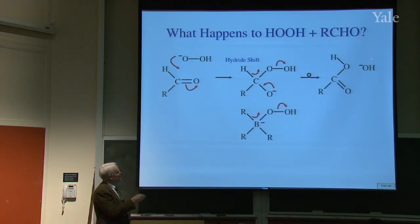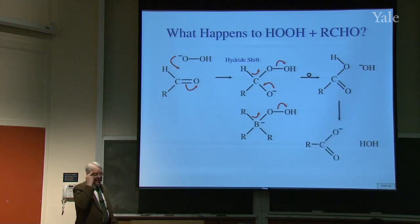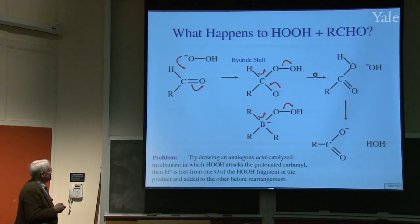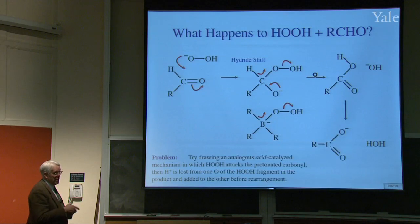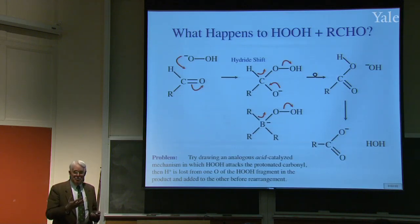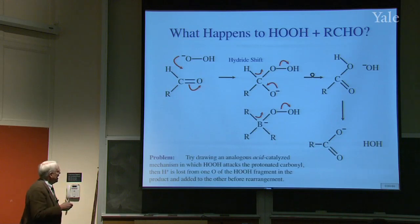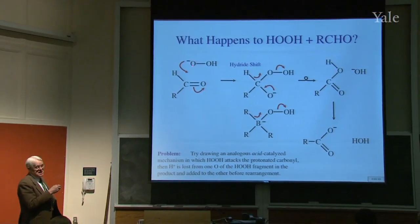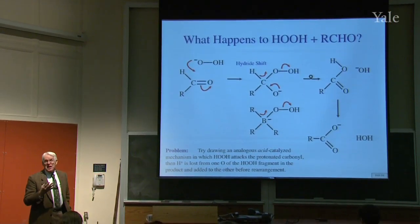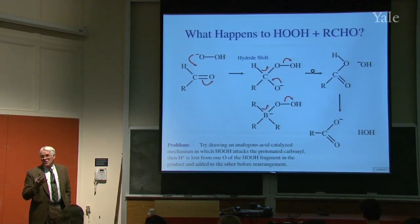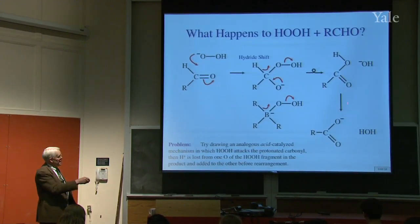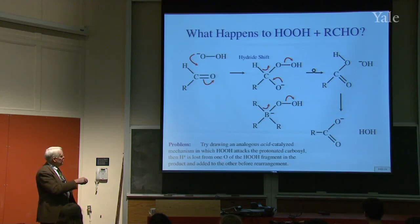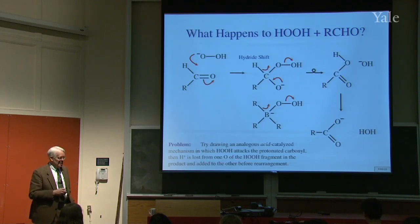The carboxylic acid product generates hydroxide, which reacts with it to give the carboxylate anion as the stable final product. That's why when hydrogen peroxide is present, the aldehyde becomes a carboxylic acid. A follow-up problem: could you draw an acid-catalyzed mechanism for the same transformation? See if you can put together a mechanism that's acid-catalyzed and reaches the same place, but protonated.